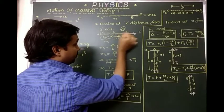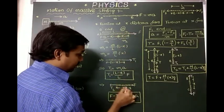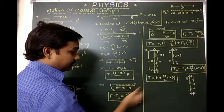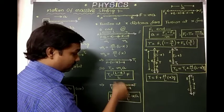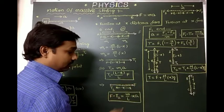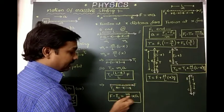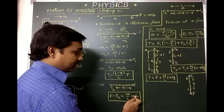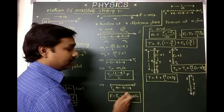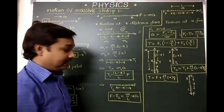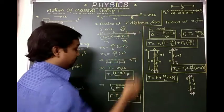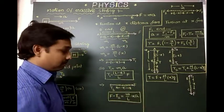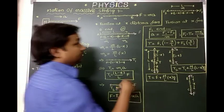For the x-distance part on the force side, the net force equation gives F minus T2 equals (m/l) times x times a. Substituting a equals F/m, we can calculate T2 in terms of force without the mass term directly, giving T2 equals F times (1 minus x/l), consistent with the previous result.